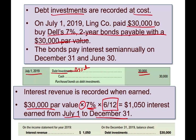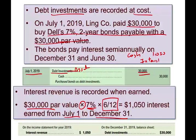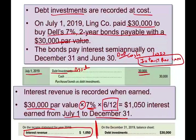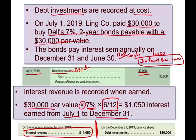What's the journal entry by December 31st? Since the bond pays interest on December 31st, we debit cash $1,050 and credit interest revenue $1,050. On the income statement, we show the interest revenue from that journal entry. On the balance sheet, we show the debt investment at $30,000. Every six months we get the revenue, and at year-end we report the bond at amortized cost.